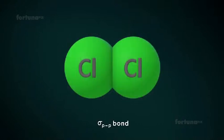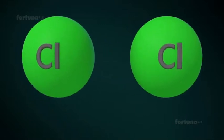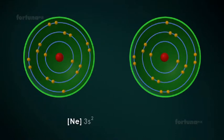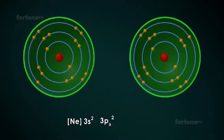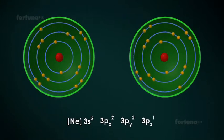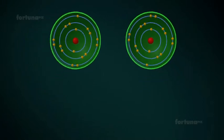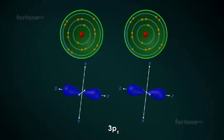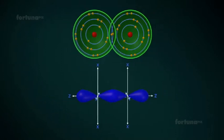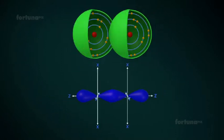Sigma-PP bond can be seen in a chlorine molecule. An atom of chlorine has an electronic configuration of Neon, 3s2, 3px2, 3py2, 3pz1. The half-filled 3pz atomic orbitals of the two chlorine atoms will overlap along the inter-nuclear axis to form a chlorine molecule.